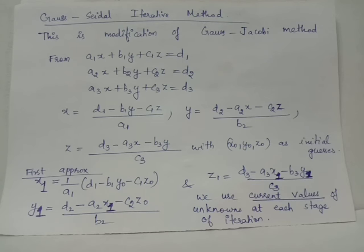Like in Jacobi iterative method, from the first linear equation we find the expression for the first variable, which is x. From the second linear equation we find the expression for the second variable, y. From the third linear equation we find the expression for the third variable, z.